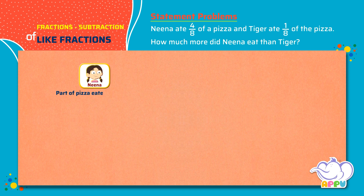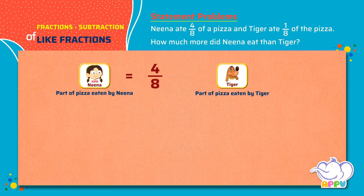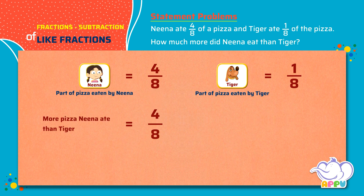Part of pizza eaten by Nina equals 4 by 8. The part of pizza eaten by Tiger equals 1 by 8. To find how much more pizza Nina ate than Tiger, we subtract 4 by 8 minus 1 by 8.